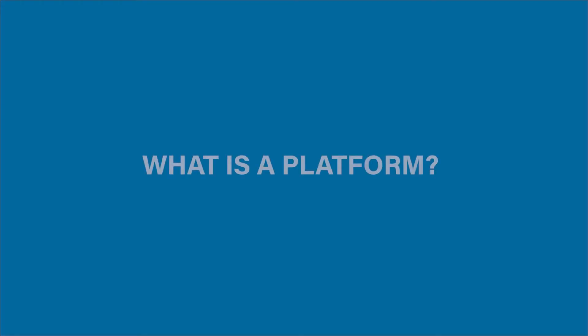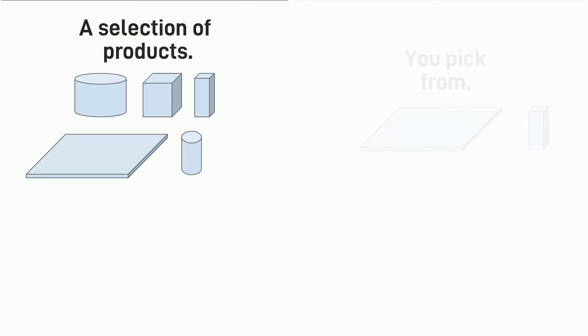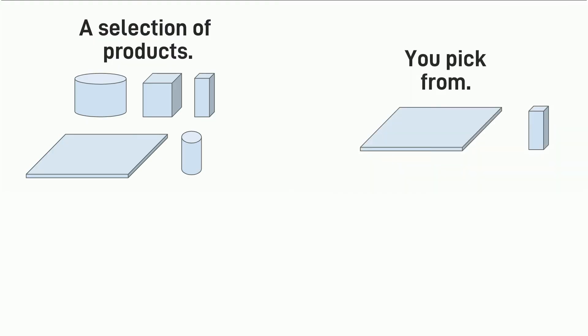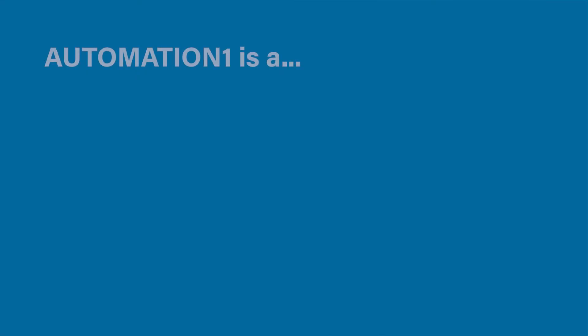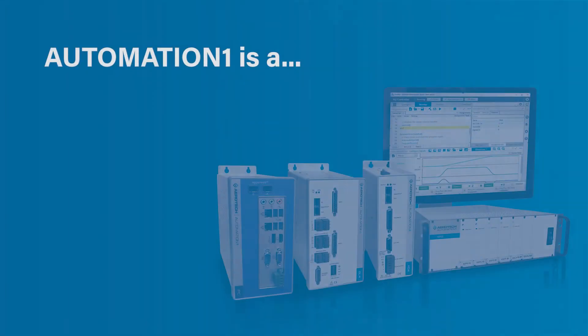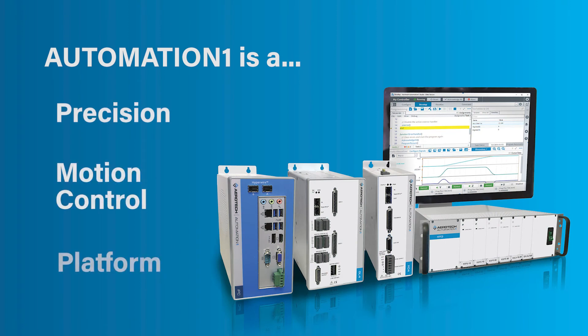But what is a platform? The last element. A platform is simply a selection of products that work together. You pick from these products to build a complete solution. So Automation One is a precision motion control platform.